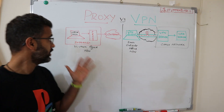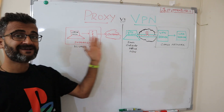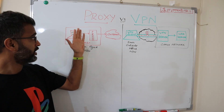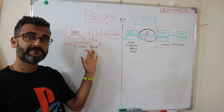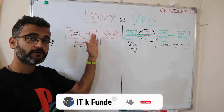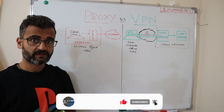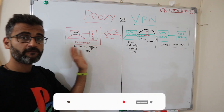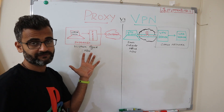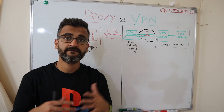Now let's look at the specific architecture. Suppose you are logged in to your office machine and trying to access the internet. Your office machine goes through a proxy server within the office premises, and then that proxy server connects to the internet. This is a good example of how a proxy works within an office network.